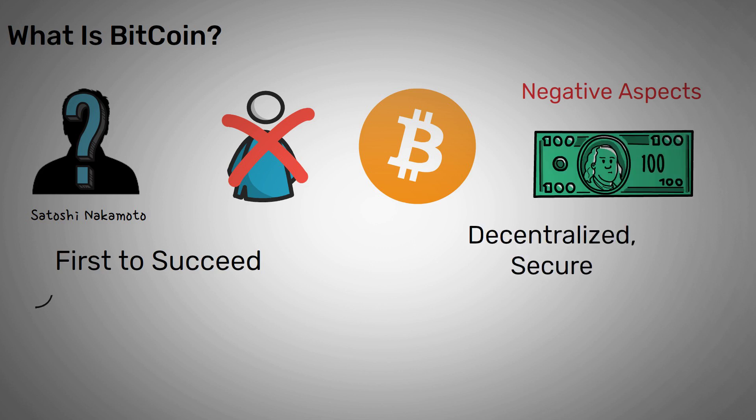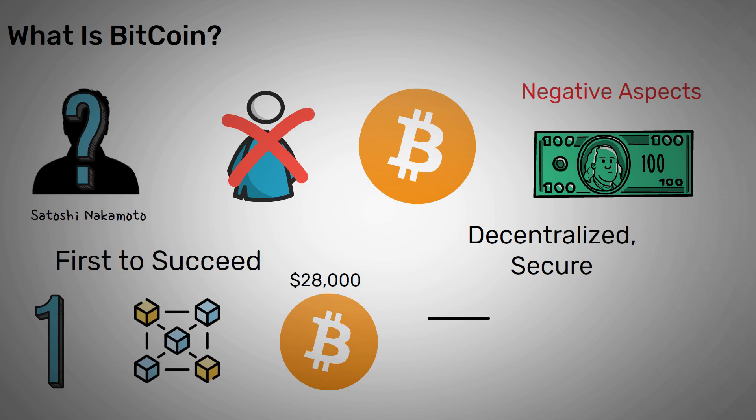The native currency of the blockchain is Bitcoin or BTC. Today the price of one Bitcoin is a little over $28,000. Much like traditional money that you can keep in your wallet, you can keep your cryptocurrency in digital wallets